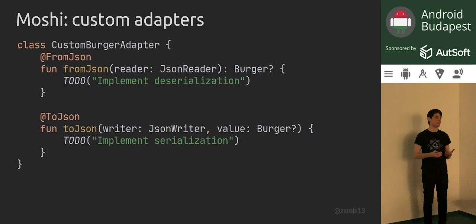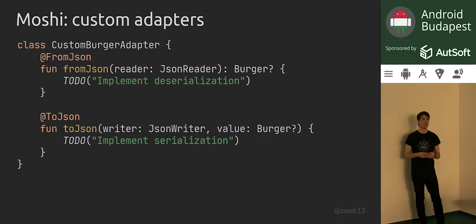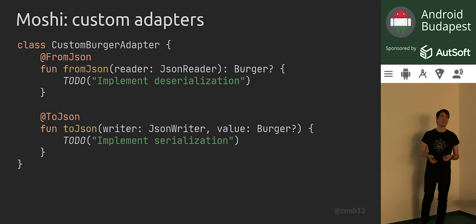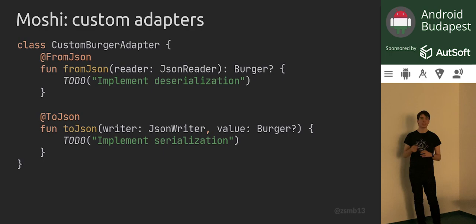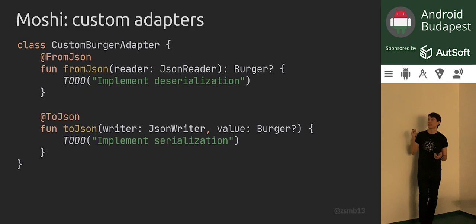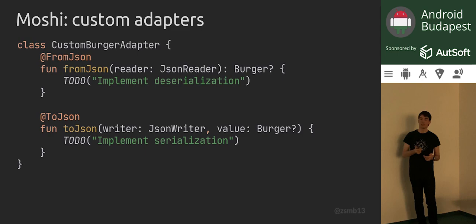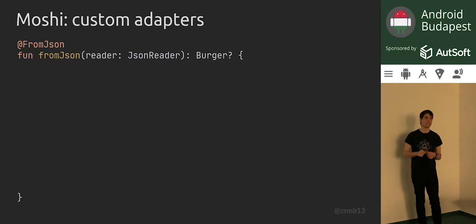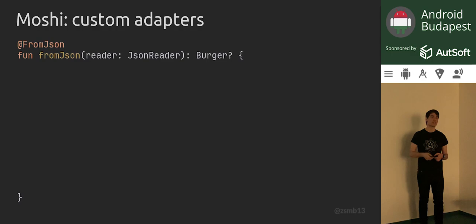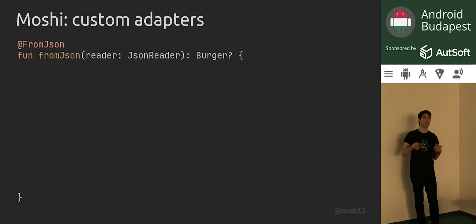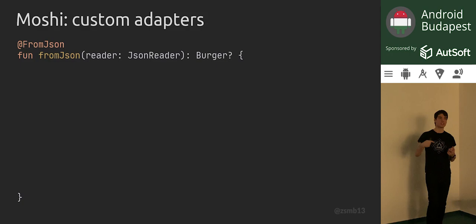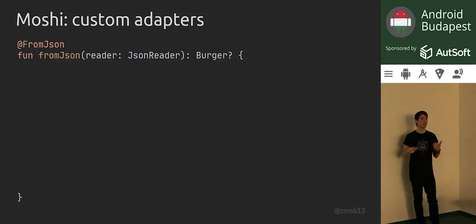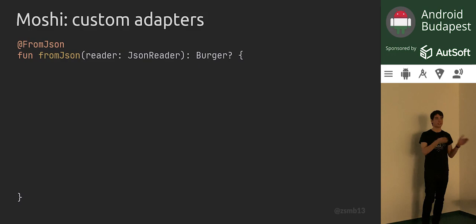What if you want to write your own adapters? For example, if you have very hard-to-work-with APIs which return random types in fields, you might need to customize serialization yourself. You can either implement the JsonAdapter interface or annotate a class's methods with @FromJson and @ToJson. The method annotated with @FromJson should take a JsonReader — a Moshi type — and parse your model object from that reader. This reader is directly backed by an OKIO buffer under the hood, so you can perform streaming deserialization: while you're still receiving the end of a response from the network, you can already start parsing what you've received so far.